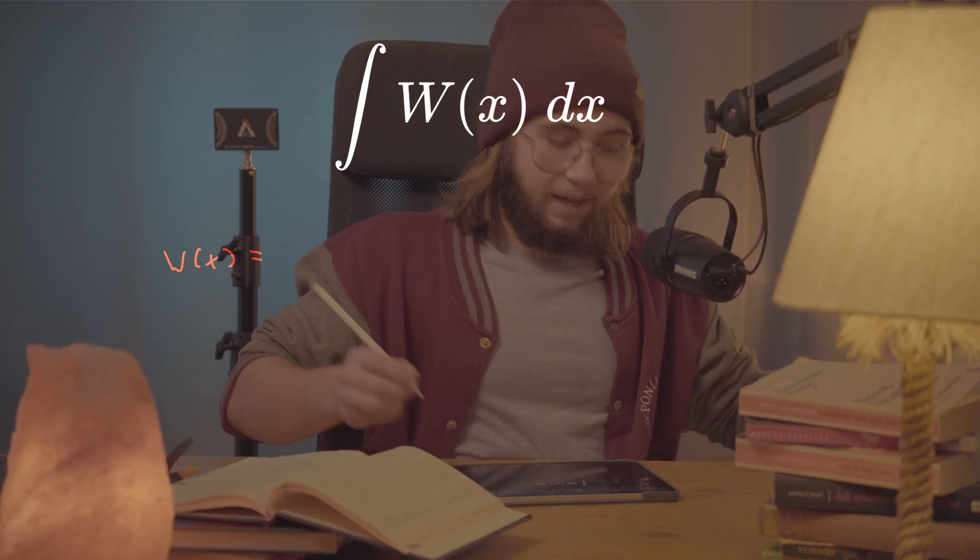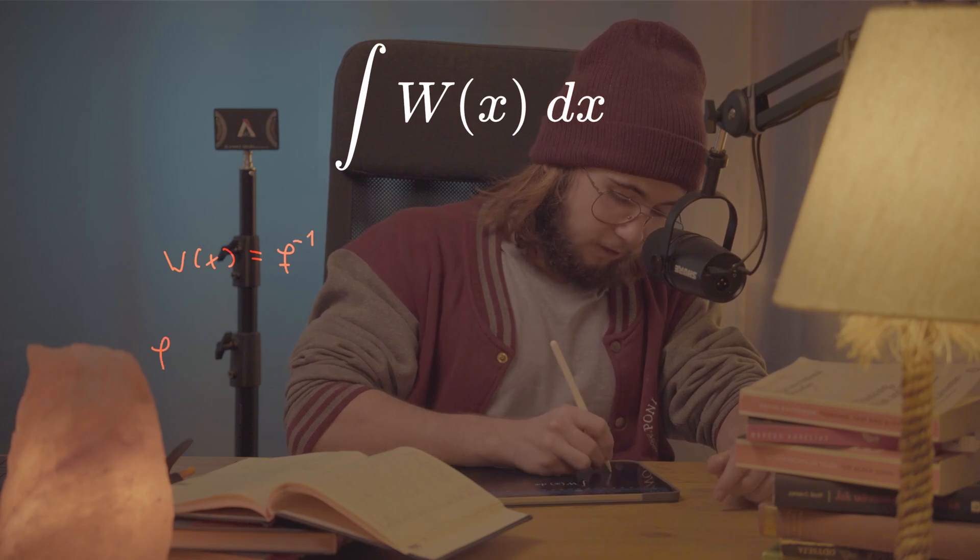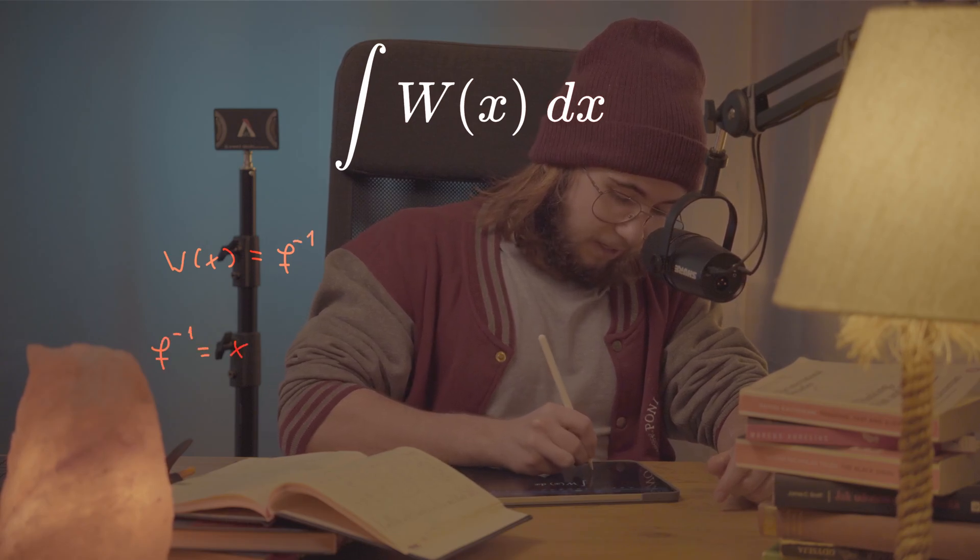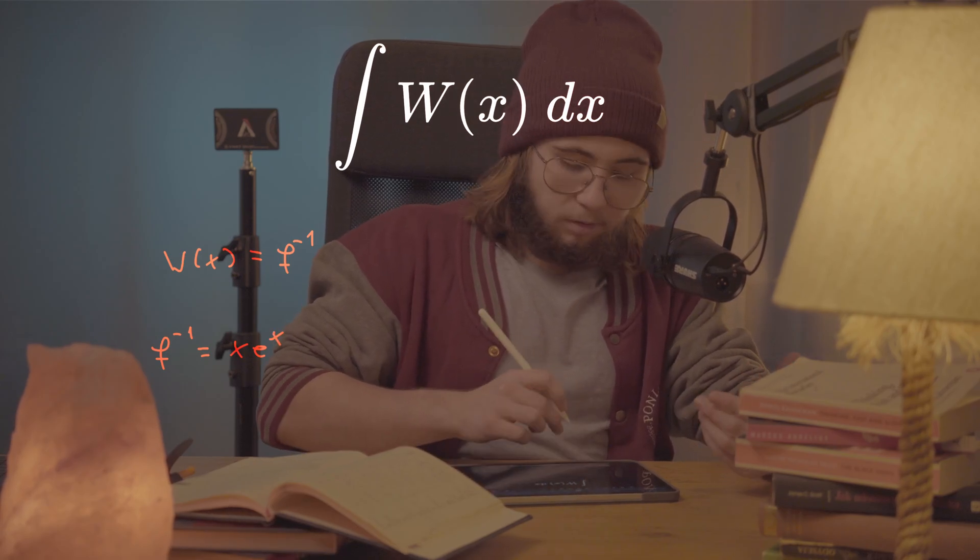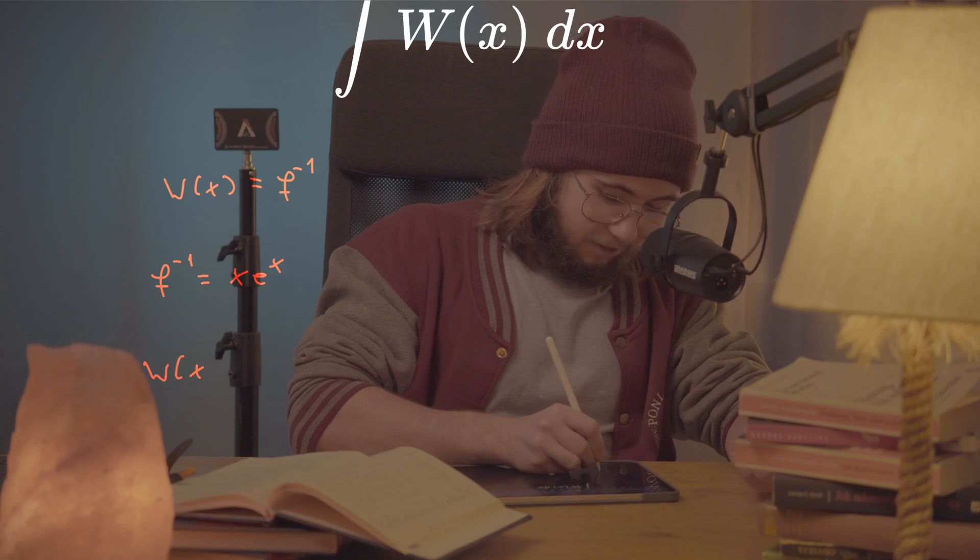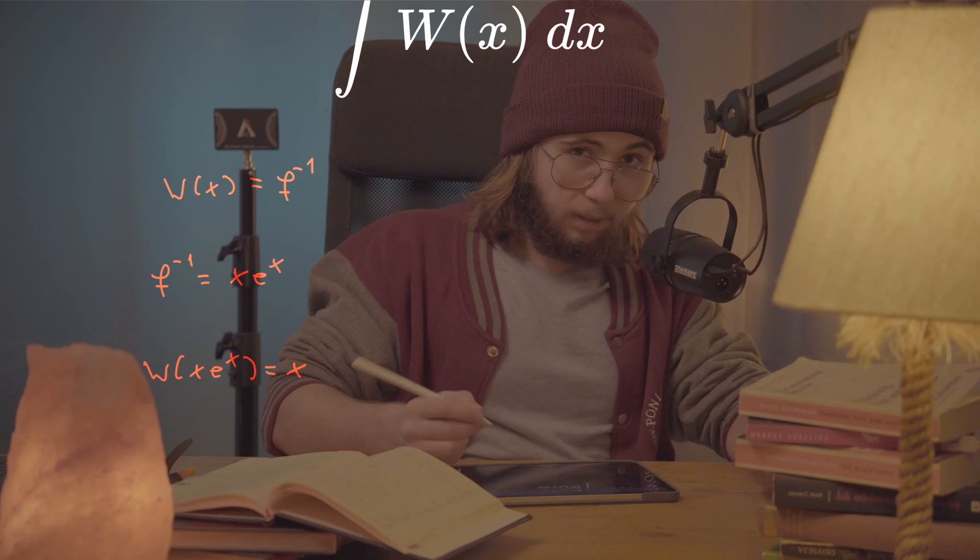is defined as the inverse of the function that is x times e to the power of x. And so what it really means is that whenever we plug in x times e to the x into the Lambert W, we are going to just get x by itself.